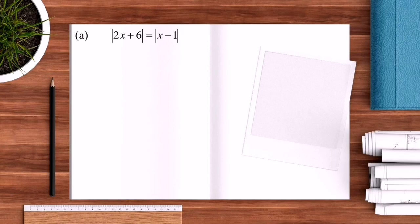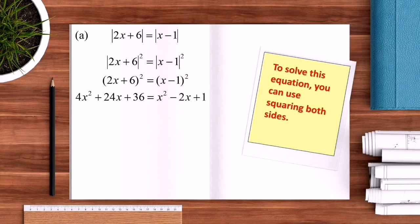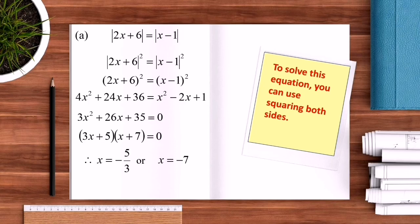Now let's look at the solution for Question A of the next set: |2x + 6| = |x − 1|. To solve this equation, we use squaring both sides: (2x + 6)² = (x − 1)². Expanding: 4x² + 24x + 36 = x² − 2x + 1, giving 3x² + 26x + 35 = 0. Factorizing: (3x + 5)(x + 7) = 0, so X = −5/3 or X = −7.